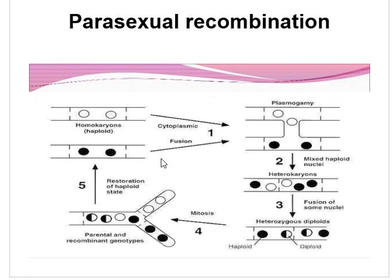In Step 4, sorting out of diploid nuclei: in those fungi which produce uninucleate conidia, sorting out of diploid nuclei occurs by their incorporation into conidia, which germinate to produce diploid mycelium. Diploid strains of several important fungi have been isolated. In Step 5, occasional haploidization of diploid nuclei takes place: some hyphae of diploid mycelium form haploid conidia, producing haploid mycelium upon germination. Some diploid nuclei undergo haploidization in the mycelium and are sorted out by incorporation of haploid nuclei into uninucleate conidia.